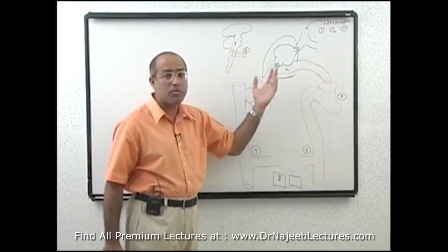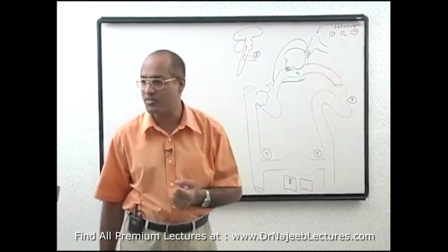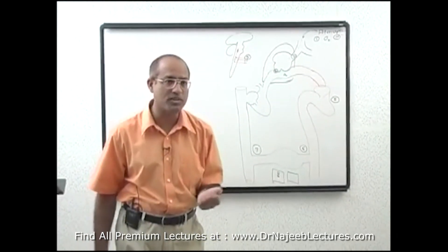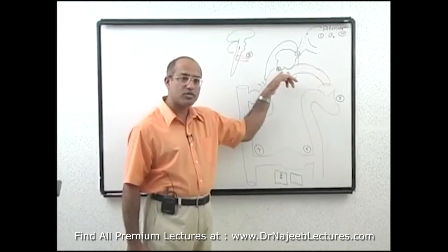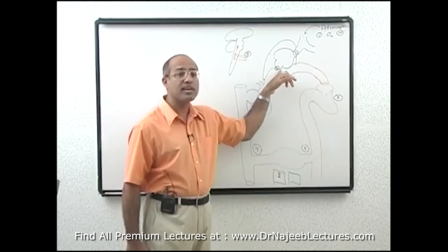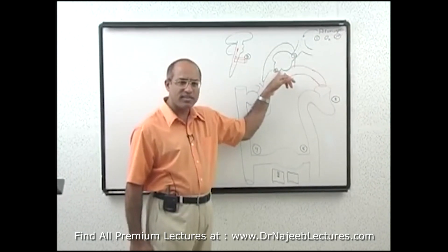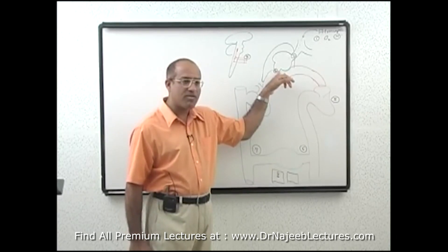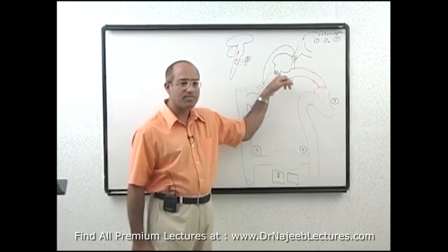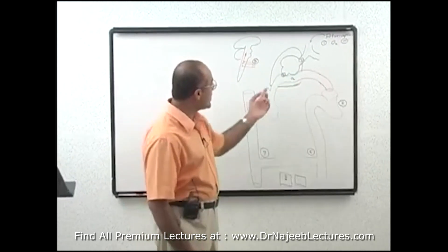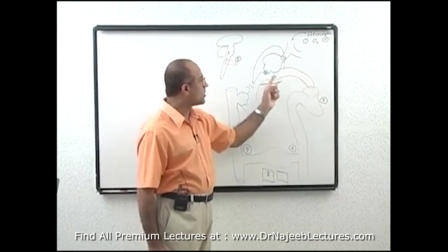There may also be a problem with the neuromuscular junction — in myasthenia gravis the neuromuscular junctions are not functional, and respiratory effort is reduced. Additionally, there can be a problem with the gas exchange area: it may be too thick and fibrotic, or it may be destroyed as in emphysema, where there is excessive destruction of the inter-alveolar septa.